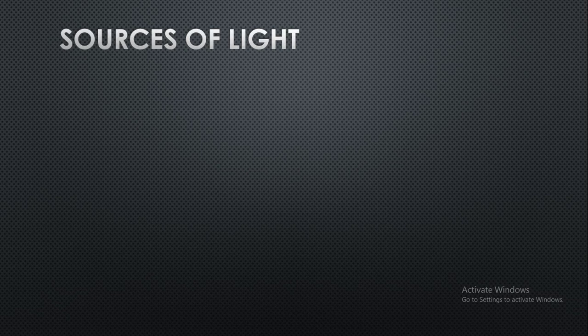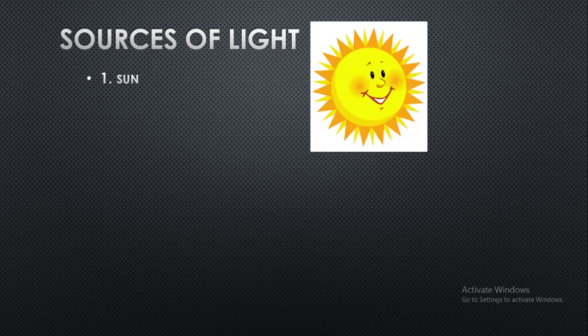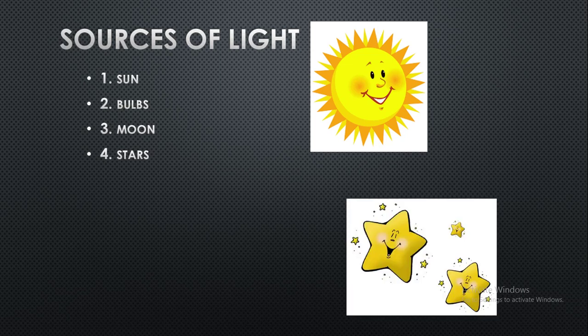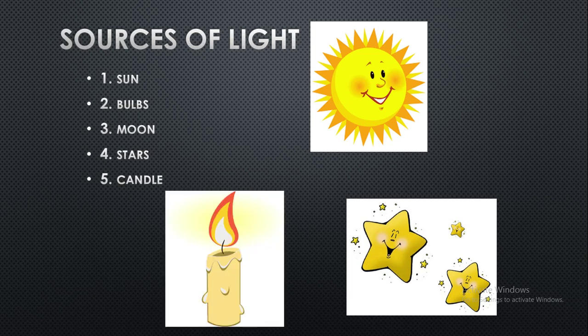If we are going to discuss the sources of light, the very first and primary source is the sun. The sun is the main source of light which produces light during daytime. Other than that, there are bulbs, the moon which also provides light during nighttime, stars which are helpful at night, candles which provide light when it is dark, and also lamps. Those are the main sources of light.